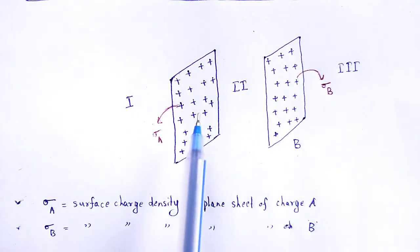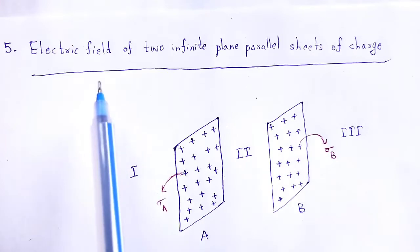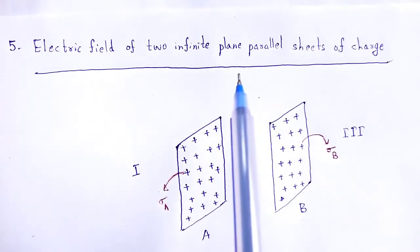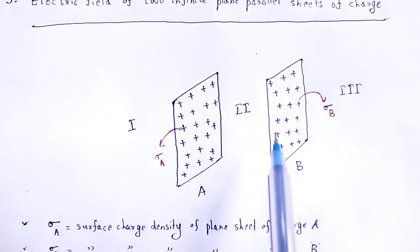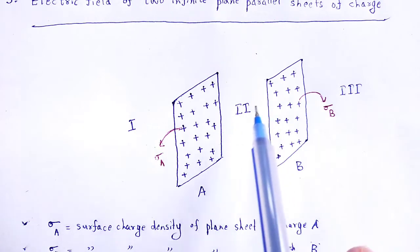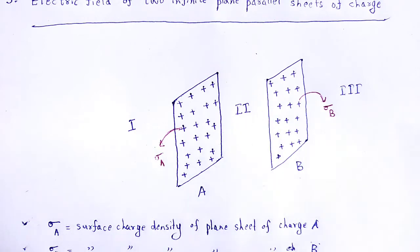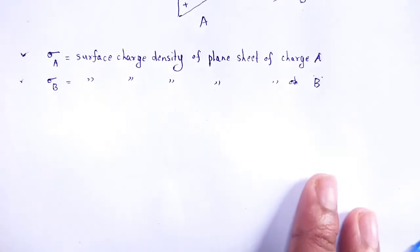We have to calculate the electric field intensity due to these parallel sheets at these three respective regions. We have to discuss them one by one, starting with region one.